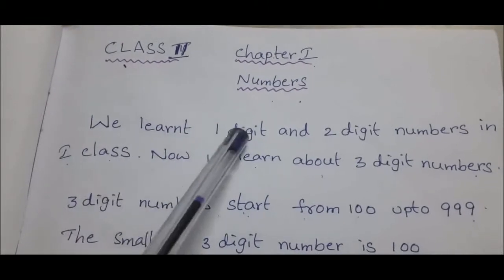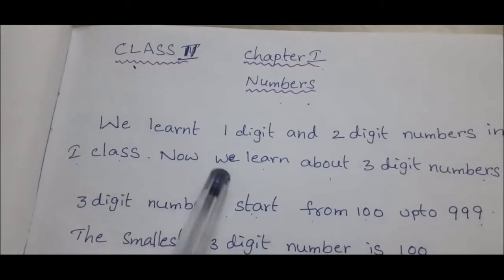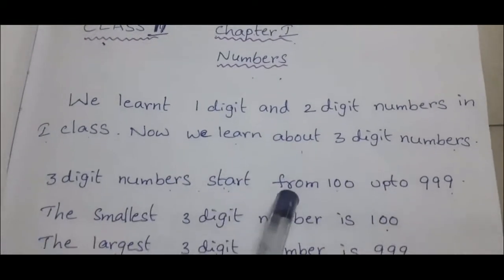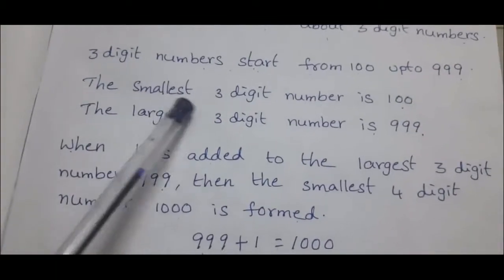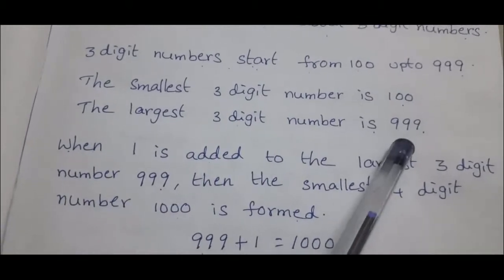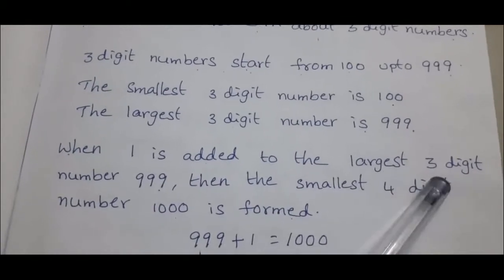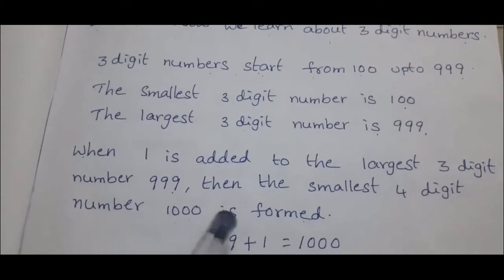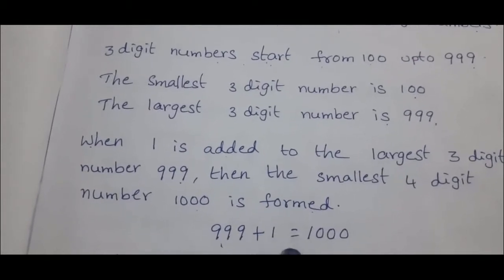We learnt 1-digit and 2-digit numbers in 1st class. Now we learn about 3-digit numbers. 3-digit numbers start from 100 up to 999. The smallest 3-digit number is 100. The largest 3-digit number is 999. When 1 is added to 999, the smallest 4-digit number 1000 is found. 999 plus 1 equals 1000.